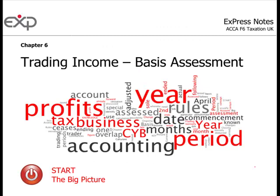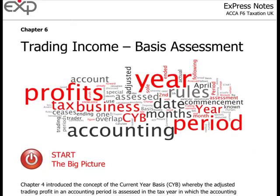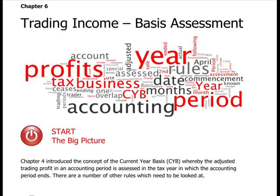Welcome to chapter 6: Trading Income Basis Assessment. This continues from the last chapter, where chapter 4 introduced the concept of current year basis, whereby the adjusted trading profit in the accounting period is assessed in the tax year in which the accounting period ends. For example, with a December year-end, you take net profit before tax, add back adjustments, then deduct capital allowances to arrive at your adjusted trading profit for December 2011, which is assessed in 2011/12.